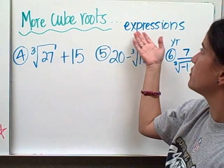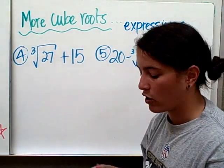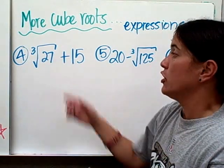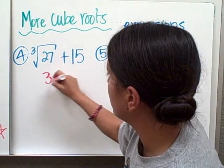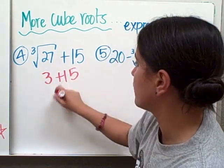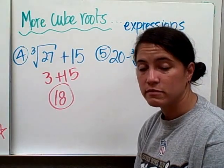All right, so some more cubed roots. How about in expressions? When solving expressions involving cubed roots, you would do the cubed root. So the cubed root of 27, we already decided 3, and 3 plus 15 is 18. Simple enough. Do you agree?